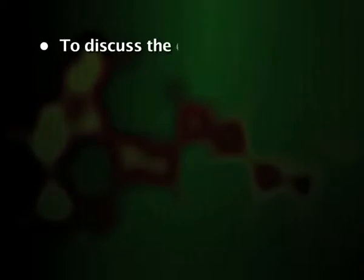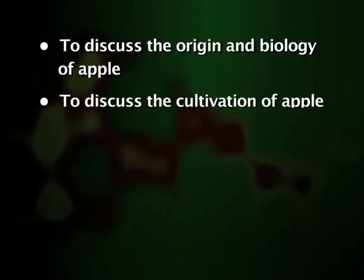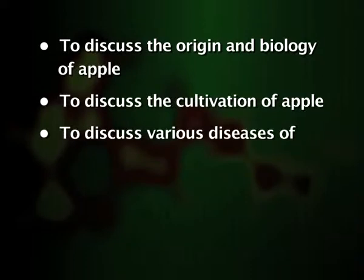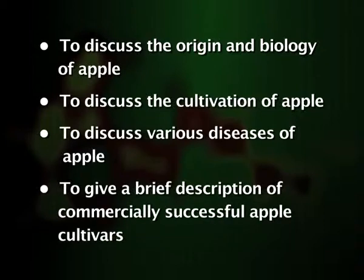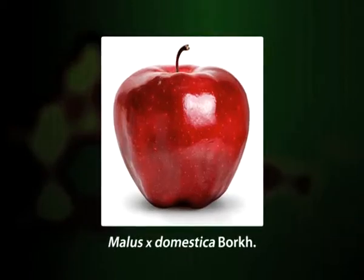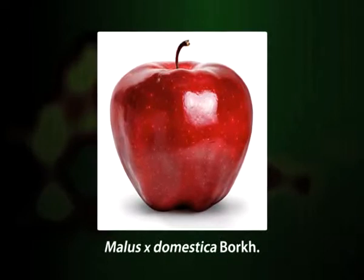Welcome students. Today's topic is apple, Malus domestica Borkh. The main objectives of today's lecture are to discuss the origin and biology of apple, to discuss the cultivation of apple, to discuss various diseases of apple, and to give a brief description of some commercially successful apple cultivars. Cultivated apple, that is Malus domestica Borkh, is economically the most important temperate fruit crop of the world in general and India in particular.